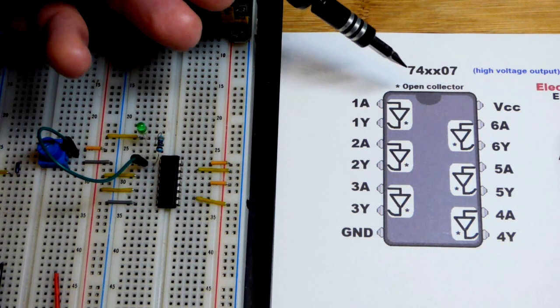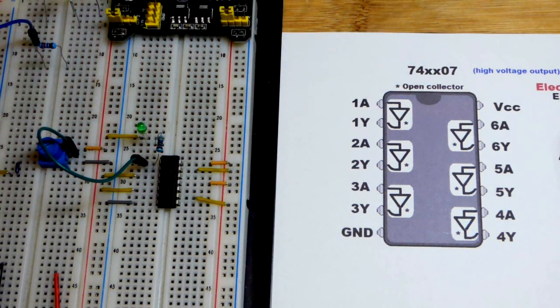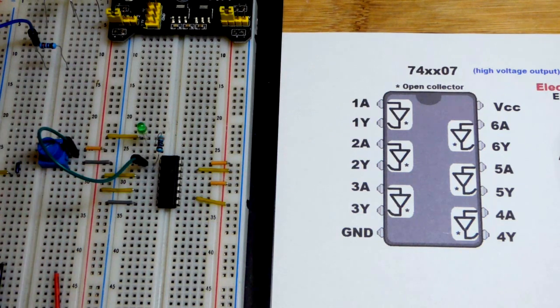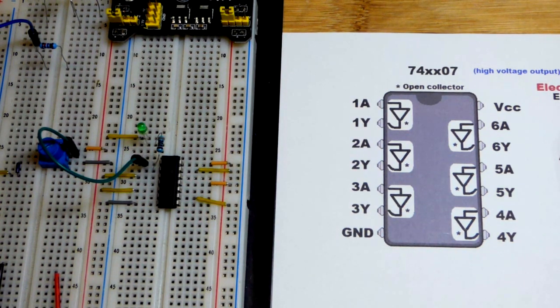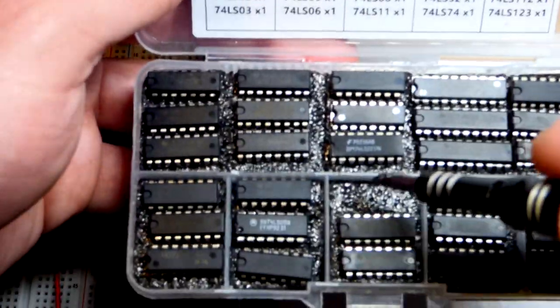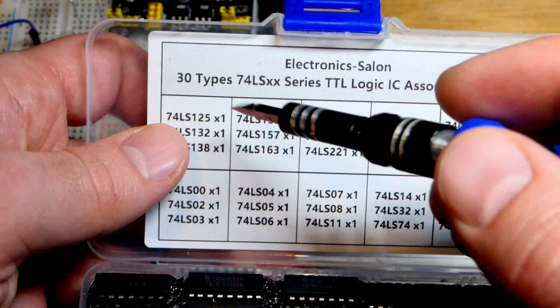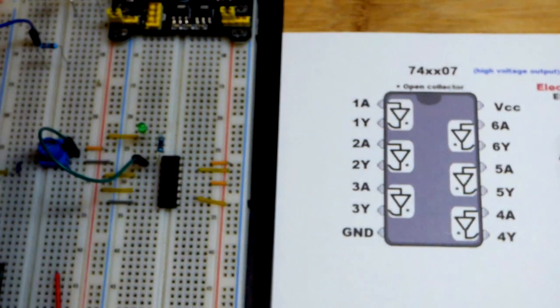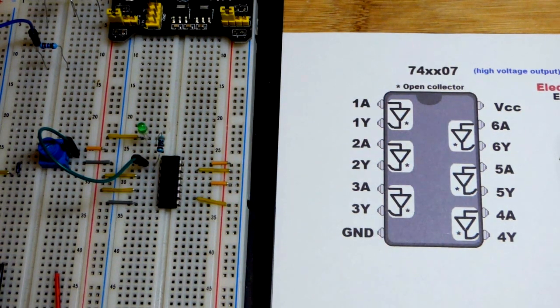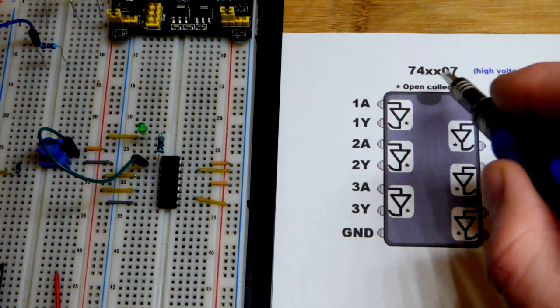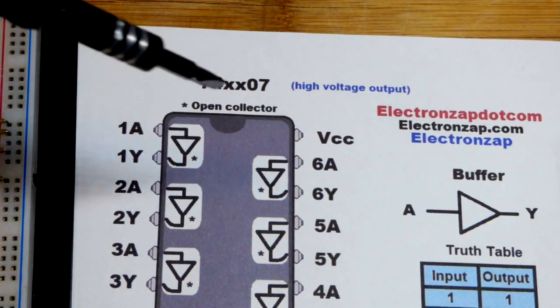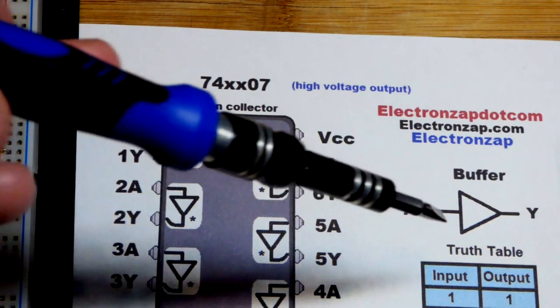In this video we're going to look at the 7407 integrated circuit. This is the 74LS07, low power Schottky. I got it from this kit. The 7407 has 6 buffers. I also have the HC kit, high speed CMOS kit, but it does not have a 7407.